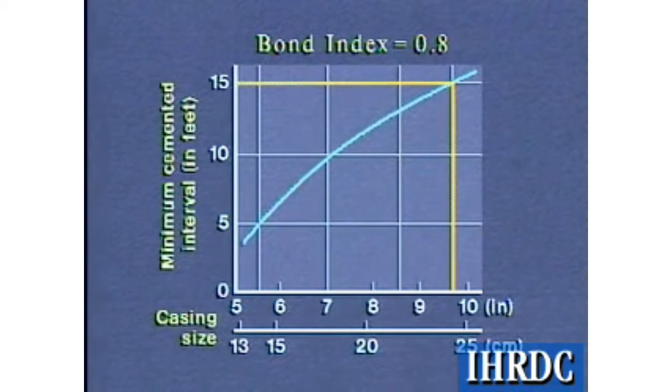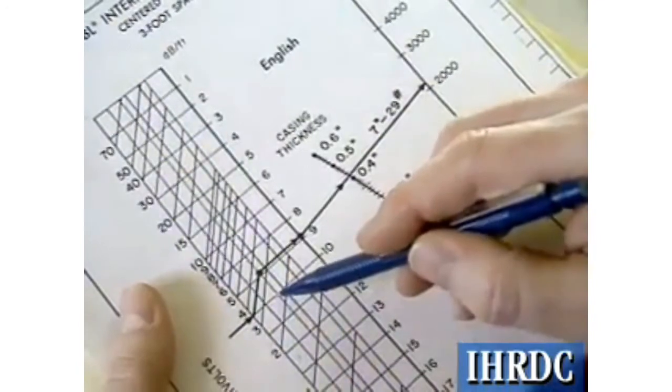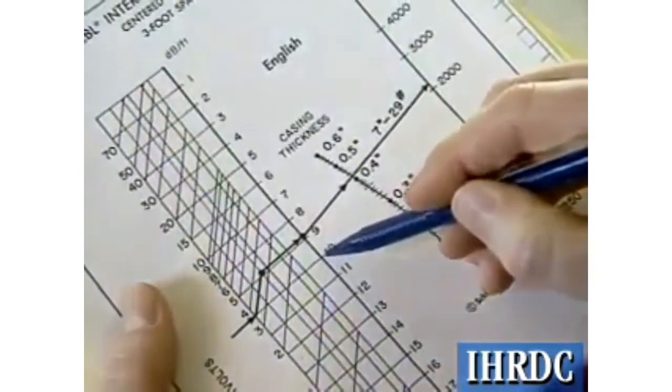The larger the casing size, the longer the interval needed to ensure hydraulic isolation. The equation for the bond index is expressed in units of decibels per foot, while most amplitude curves are presented in millivolts or percent-free pipe. Most service companies have charts to convert from millivolts to decibels per foot, and vice versa.